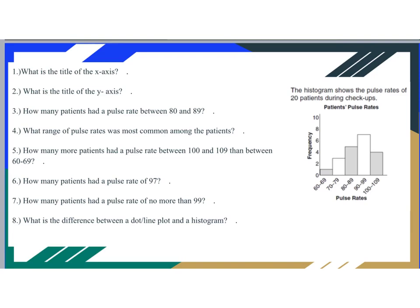Let's take a look at this slide. Anything that I'm writing on my screen, you're going to type into the green boxes on your Google Docs. What is the title of the x-axis? Remember that your x-axis is your horizontal axis — so here are all of the ranges, but the actual title would be pulse rates. What is the title of the y-axis? That's your vertical axis, and you can see the scale — it just has the title frequency.